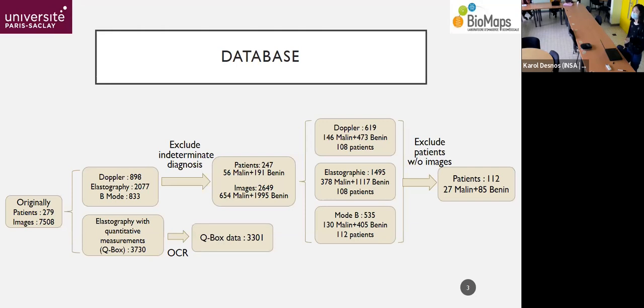So after that, we have only 112 patients. And among them, 27 are with malignant nodules, others are with benign nodules. And for the quantitative measurement part, we use the optical character recognition to read the Q-box elasticity data. And we have 3301 Q-box data.